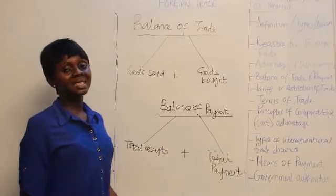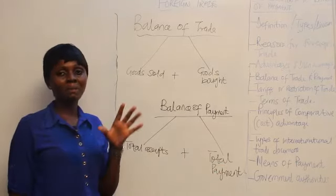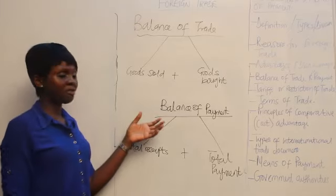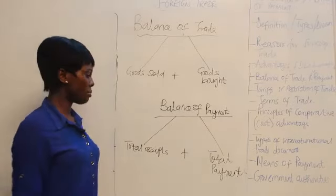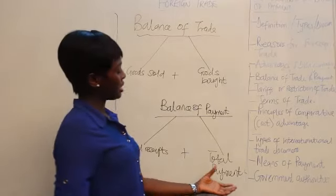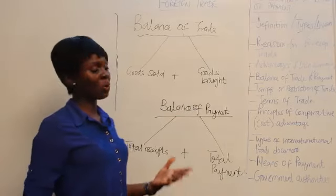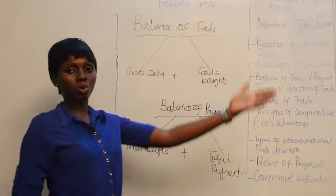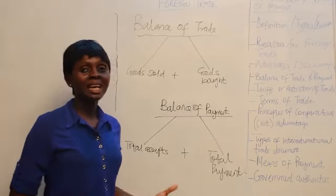Balance of payments is a record or statement showing a country's total receipts and total payments within a particular period, usually a year. A favorable balance of payments means the country's receipts are greater than its total payments. When a country's total payments to other countries are greater than its receipts, it is called an unfavorable or negative balance of payments.